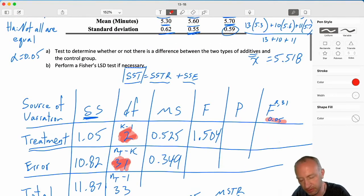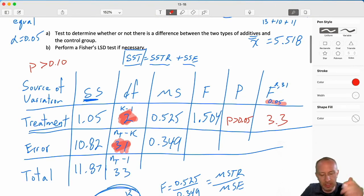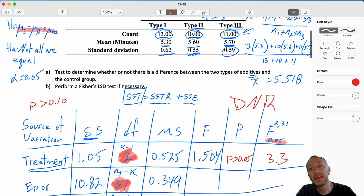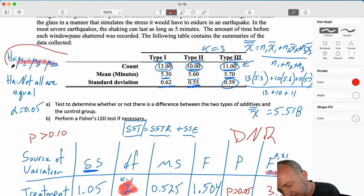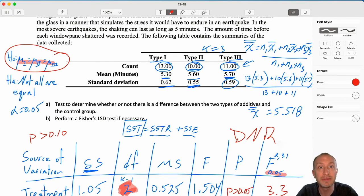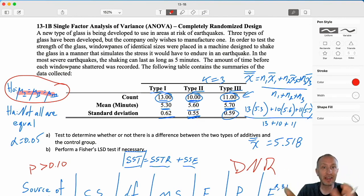I have our p-value for this test is greater than 0.1 with alpha. That test statistic, f critical 3.3. We have insufficient evidence here to reject. Our evidence in this case does not support the alternative hypothesis. Our evidence in this case supports the null hypothesis. We have no reason to believe that any one of these three types of glass can withstand the shake from an earthquake any better. All three of these glasses, as far as we can tell, have the same capability of withstanding that length of time shaking from an earthquake.